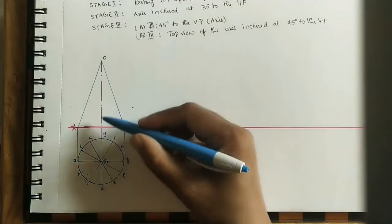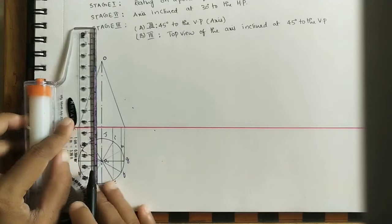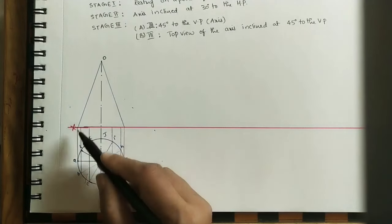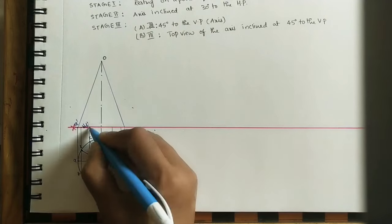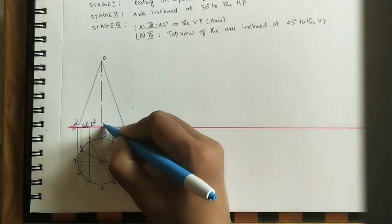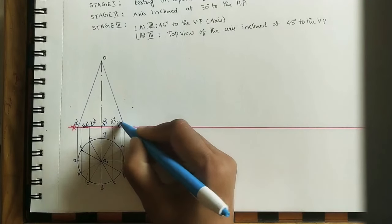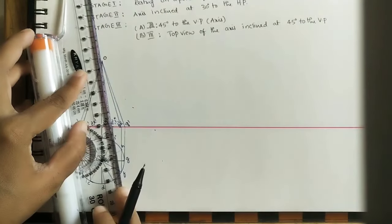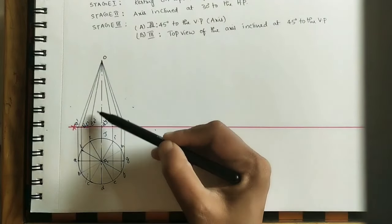Draw projector lines at all labeled points up to the XY line, using light color. Mark the intersection points in the front view: a' and b', l' here, c' and k', d' and g' (both at the same point in the top view), e' and i', f' and h', g'. Join all these points to the apex O. This completes Stage 1 with the front view and top view showing all generators.